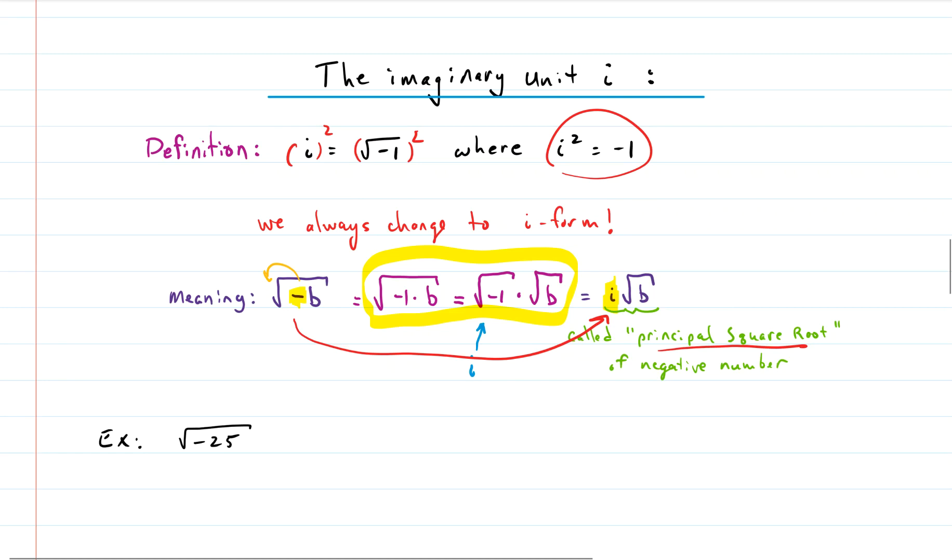So let's do a quick example of changing to i form. This negative here is underneath an even indexed radical. So that means it will come out and it will be an i. And then I'll have root 25. And the square root of 25 is 5. Convention says that you should put the i in front of the number, as long as there's no square root or any radical in front. So the square root of negative 25 is 5i.